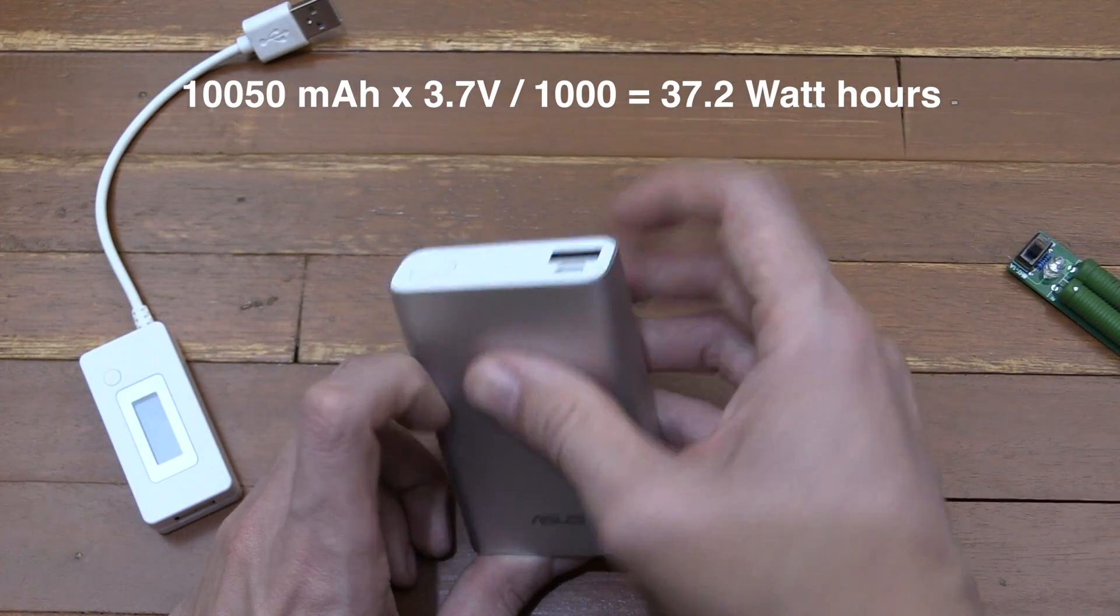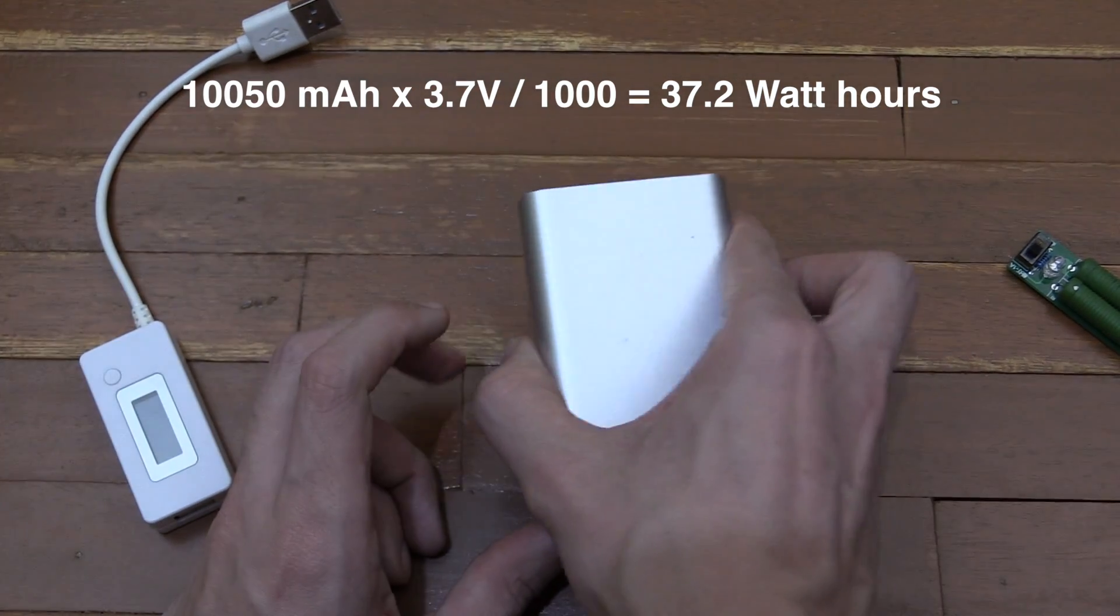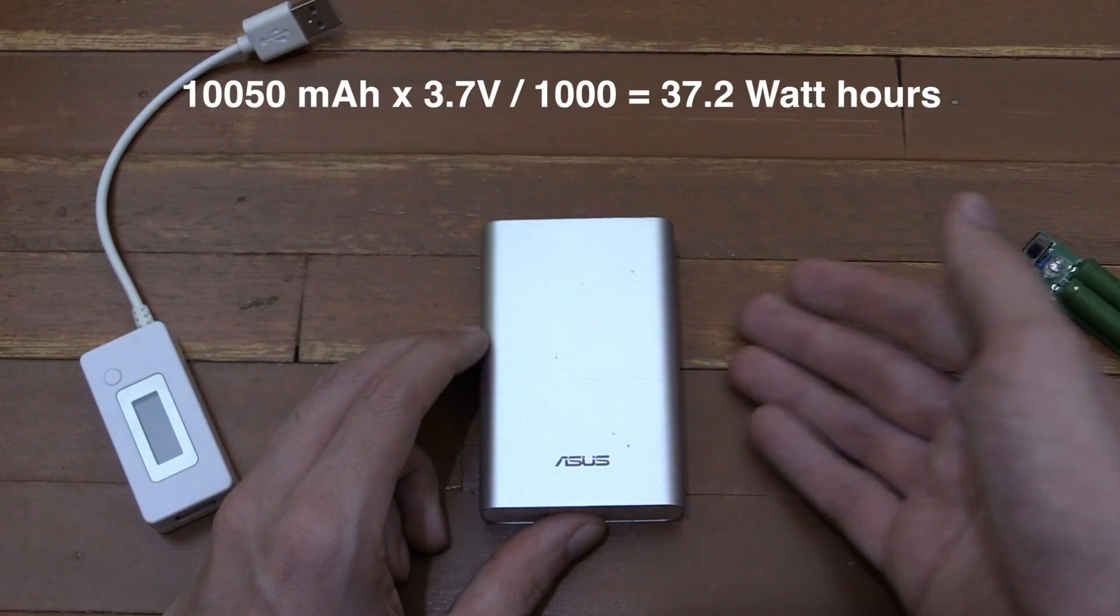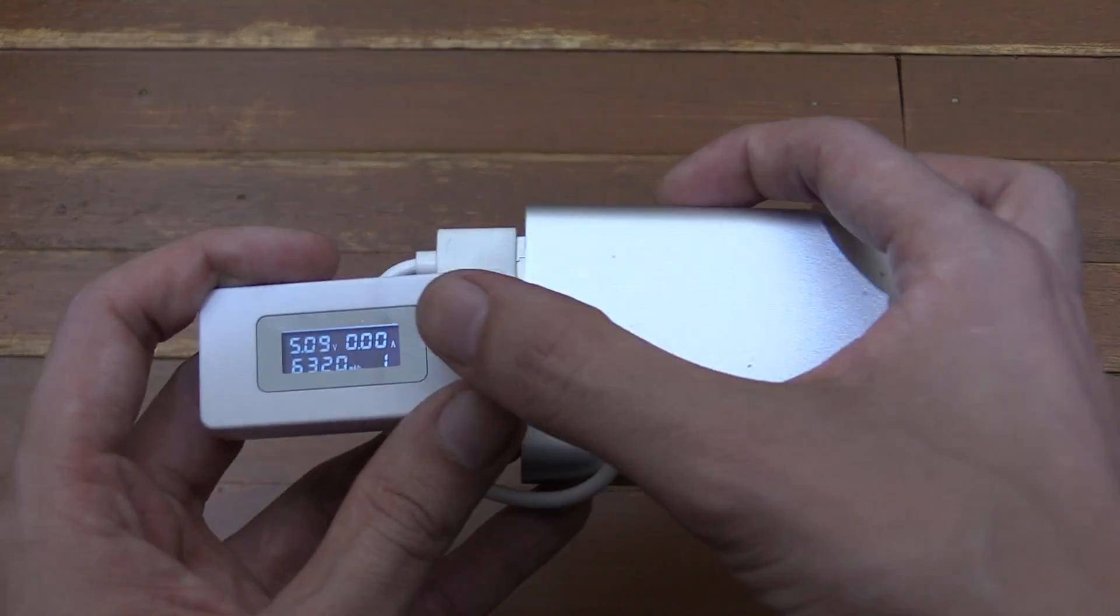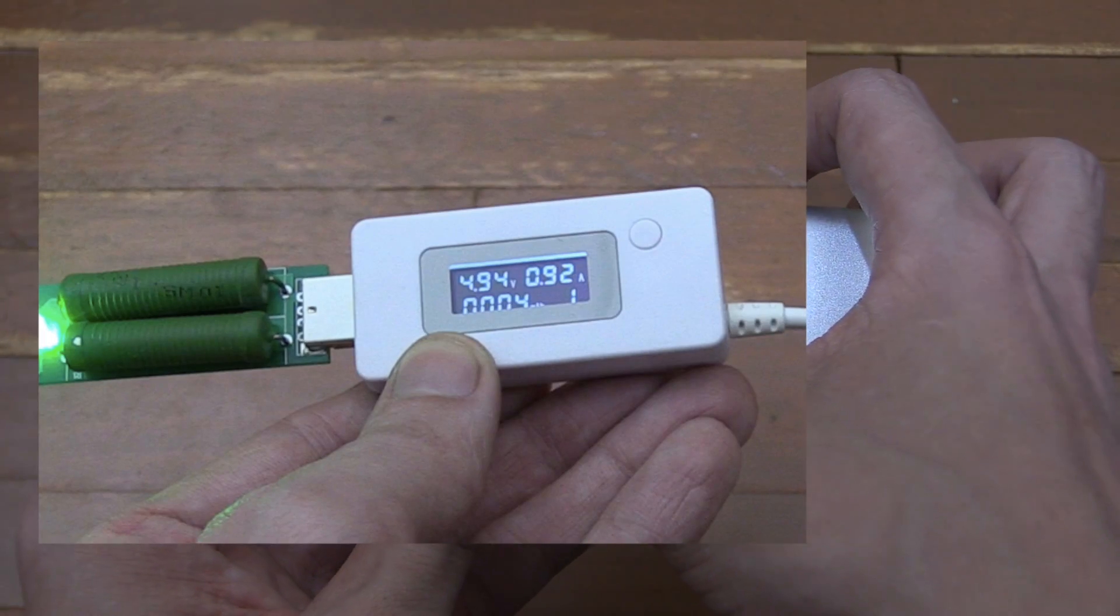So obviously that's going to affect it. Now when we were drawing power out, we were drawing it around 4.94 volts, and we totaled 6,320 milliamp hour.